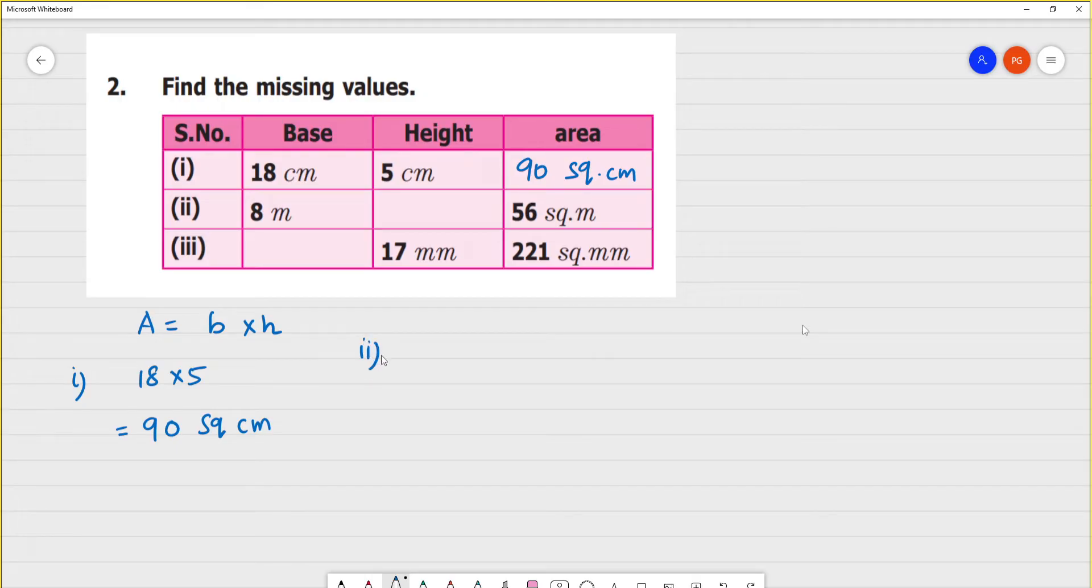Next, second one. Base into height is equal to area. Area is equal to 56 square meters. Height is equal to 56 divided by 8. So, the height is equal to 7 centimeters. Here is the 7 centimeters.